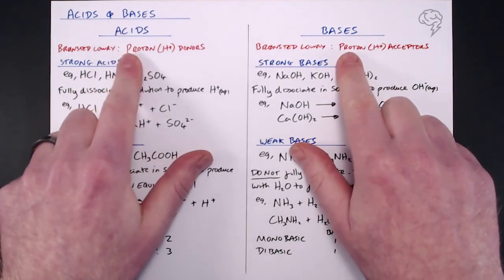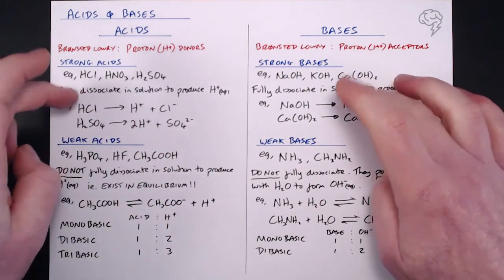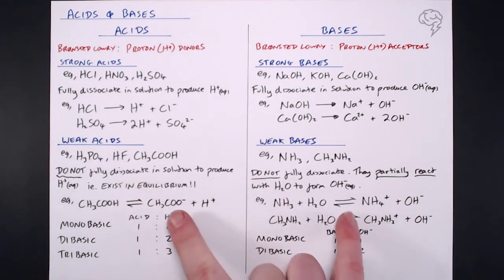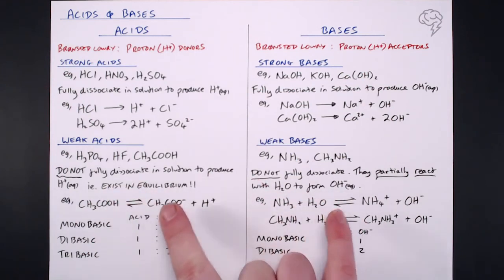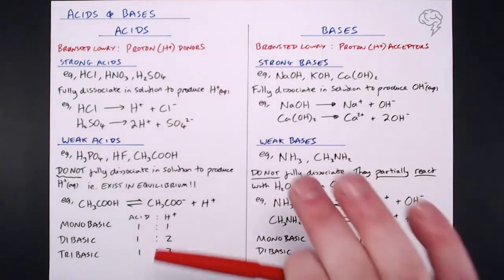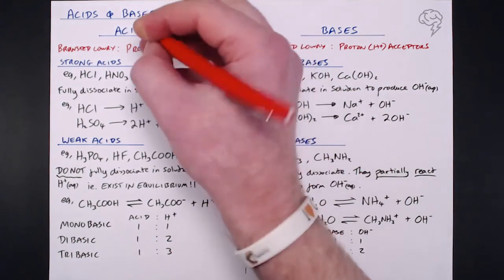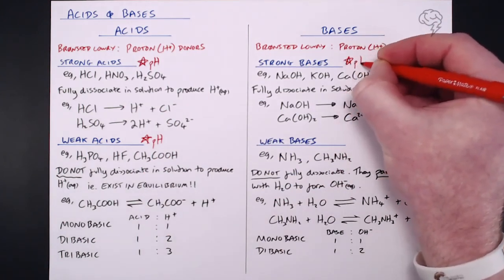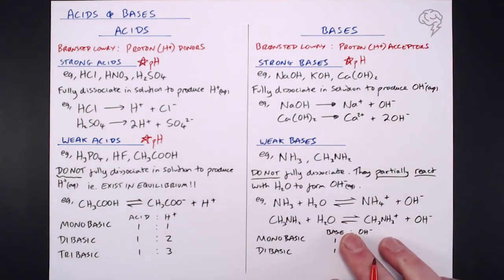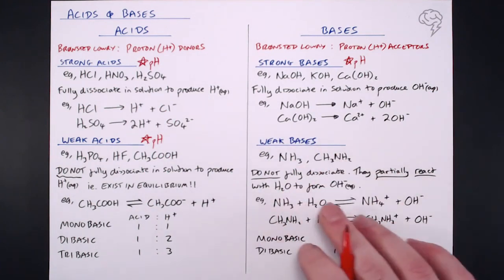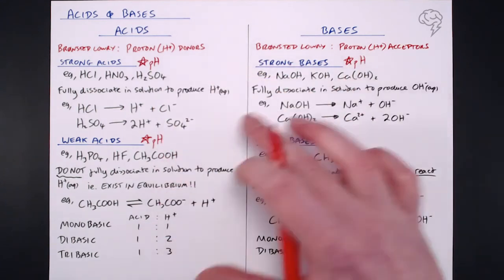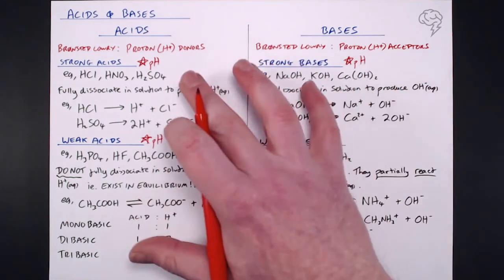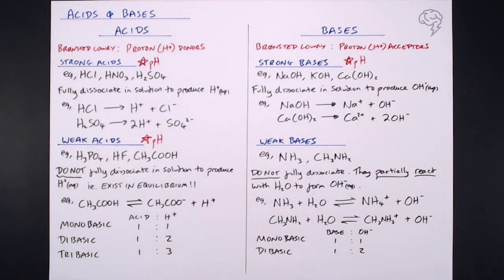I would go ahead and know your definitions, especially of strong and weak acids and bases, and make sure you can write equations to show them - not forgetting that weak acids and weak bases exist in equilibrium. Now, the last thing to say is that there are calculations you need to know. You must be able to calculate the pH for strong acids, for weak acids, and for strong bases. You will not be asked to calculate the pH for weak bases at A-level, but certainly for those three you're going to need to be able to calculate pH. That's what we're going to go into in the next few tutorials.